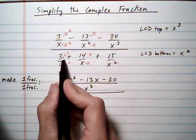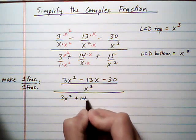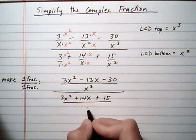The bottom turns into 3x squared, plus 14x, plus 15, all over x squared.